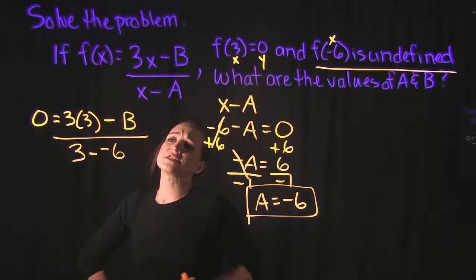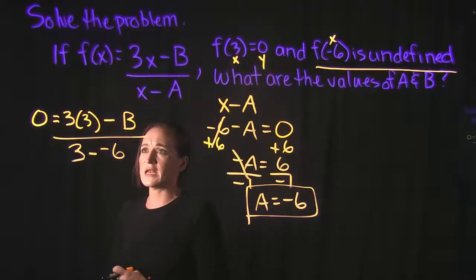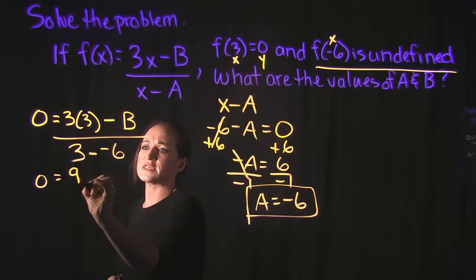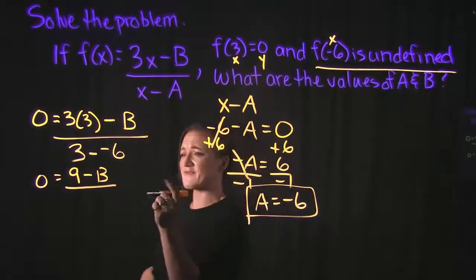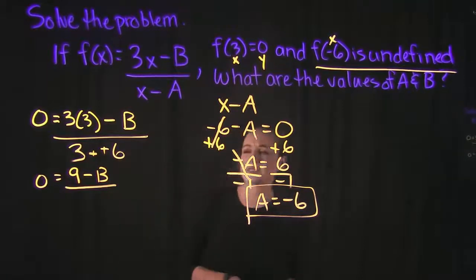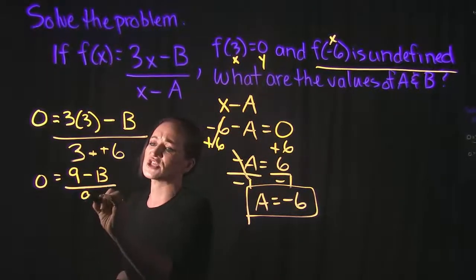So since b is the only variable here, we should be able to solve this. So let's do a little bit of cleanup first. In our numerator, we have 3 times 3, which is 9. So we have 9 minus b over, in our denominator, we have that double negative rule. This minus this negative turns into plus a positive. So that gives us 3 plus 6 in our denominator, which is 9.